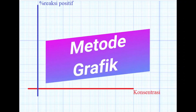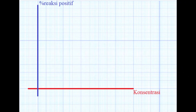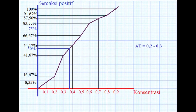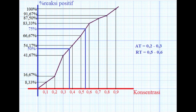Pada metode grafik, gunakan milimeter blok. Tarik garis X sebagai konsentrasi, dan garis Y sebagai reaksi positif, kemudian plot sesuai data. Jika sudah, kita tarik pada konsentrasi 50% ke kanan dan kemudian tarik ke bawah, sehingga didapatkan nilai AT dengan nilai antara 0,2 dan 0,3. Kemudian, untuk menentukan nilai RT, dengan menarik dari 75% ke kanan, kemudian tarik ke bawah, sehingga didapatkan nilai RT di antara 0,5 dan 0,6.